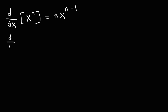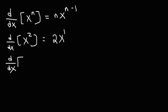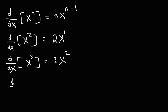Let me give you some examples. If we want to find the derivative of x squared, it's going to be 2x, and then subtract the exponent by 1, so 2x to the first power. If we want to take the derivative of x cubed, it's going to be 3x to the second power. Pretty much you move the exponent to the front and then subtract it by 1. Likewise, if we want to find the derivative of x to the fourth power, it's 4x cubed.